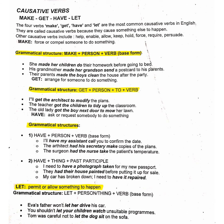Next one is get. Get is used to arrange for someone to do something. Grammatical structure: get plus person plus to plus base form. Examples: I will get the architect to modify the plans. The teacher got the children to study outside the classroom. The old lady got the boy next door to mow her lawn.